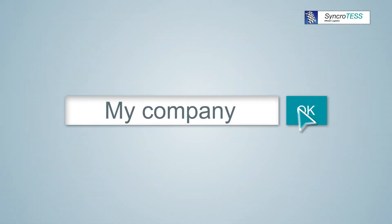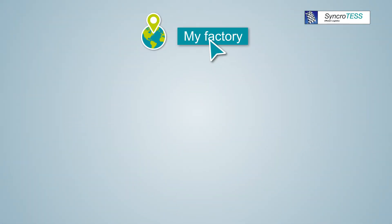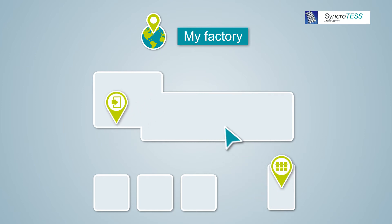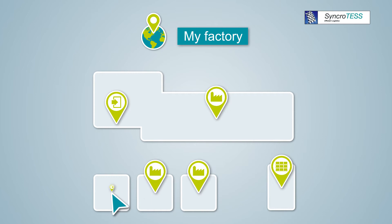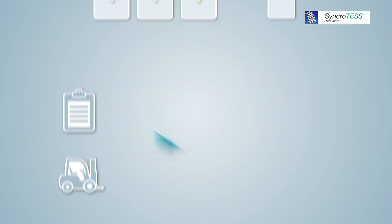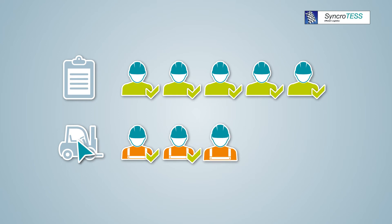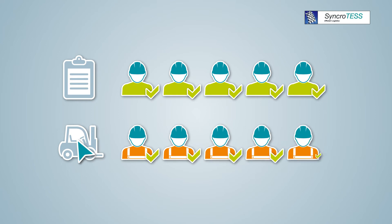This is how it works. You log on and determine your location on the web map. There you indicate all the relevant points such as goods in, warehouse areas, production floors, and goods out. You then register your order notifiers and drivers, and off you go.